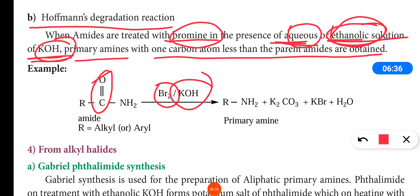If there are three carbon atoms in the amide, you will get an amine with only two carbon atoms. The parent amide will give an amine with one carbon atom less. A primary amine is formed.